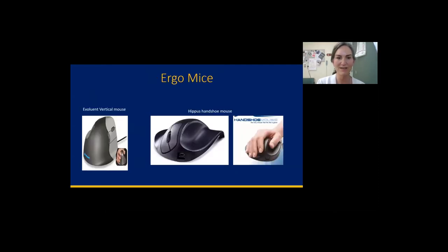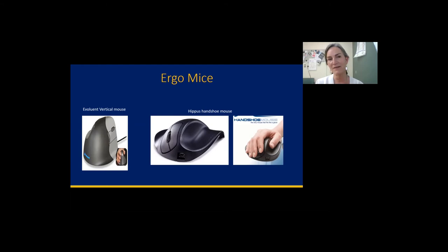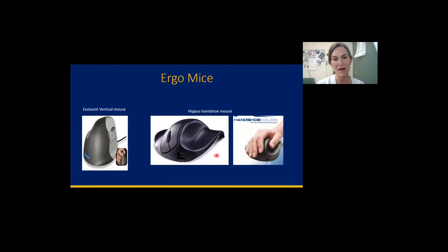These are ergonomic mice — the two most common I recommend in the clinic. The first is completely vertical; it just puts you in a nice neutral position, although you can still use it incorrectly. Using it correctly means using the shoulder to move the entire mouse rather than side to side. This one is called the Hippus Handshoe Mouse — it literally almost looks like a splint and you rest your hand right in there, again moving the whole forearm and shoulder girdle complex.